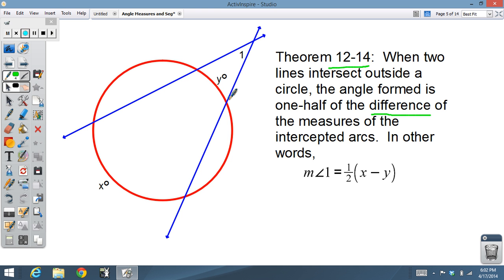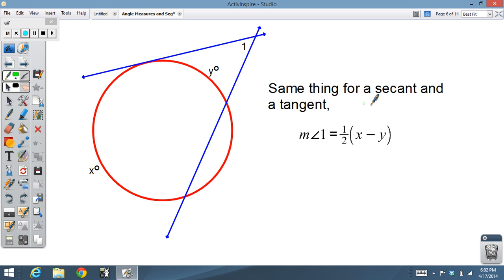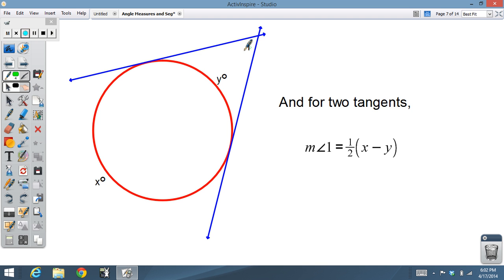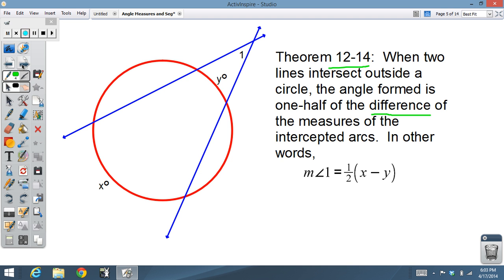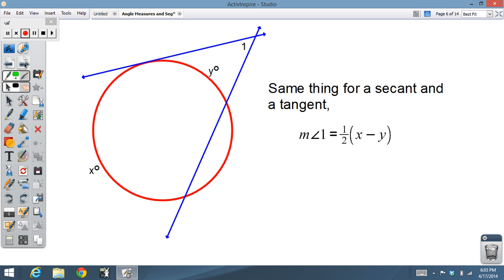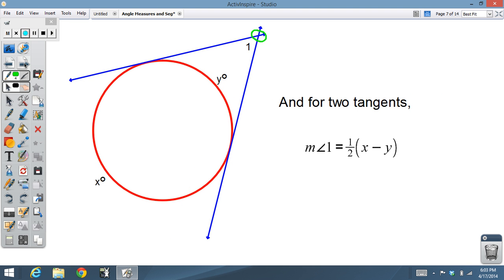So that can apply when we have two secants as we have here. It also applies to a secant and a tangent, that the measure of angle 1 is one half of x minus y. And it also applies for two tangents. Measure of angle 1 is one half x minus y. Whenever two lines intersect outside the circle, our measure of that angle is one half of the difference of the two intercepted arcs. I'll show you the first one: go back again to two secants, back again to a secant and a tangent, same for two tangents, same formula, one half the difference.